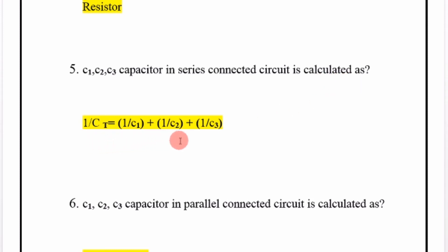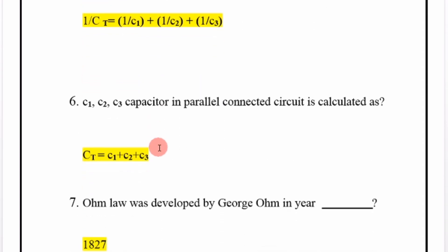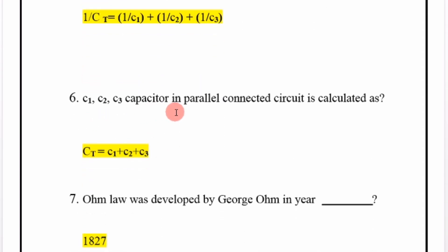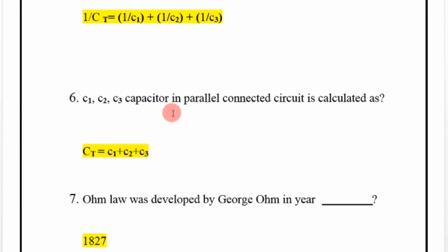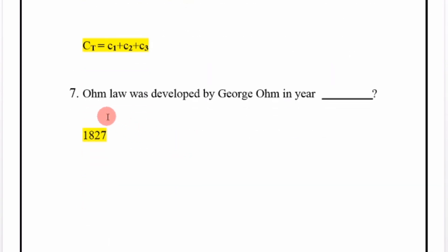For capacitors C1, C2, C3 in a parallel connected circuit, the total capacitance is calculated as: CT is equal to C1 plus C2 plus C3.